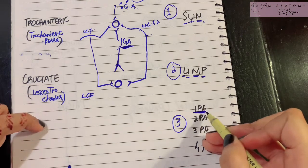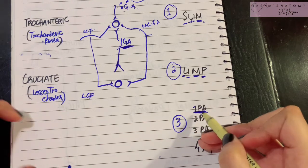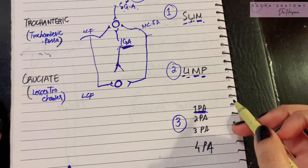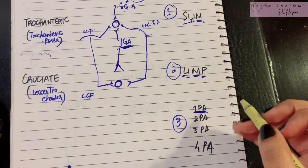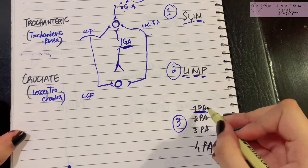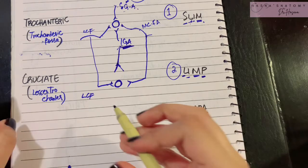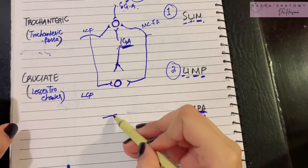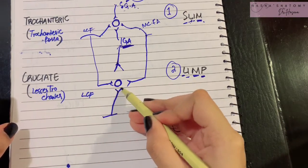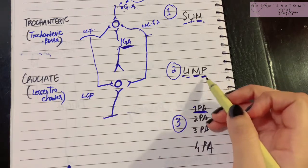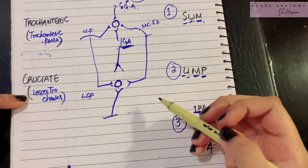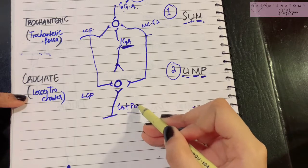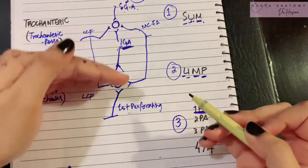P stands for the first perforating artery, which is a branch of the profunda femoris artery. The profunda femoris artery gives the first perforating artery, which gives an ascending branch providing the fourth contribution to the cruciate anastomosis. Everything is being interconnected as we go below.